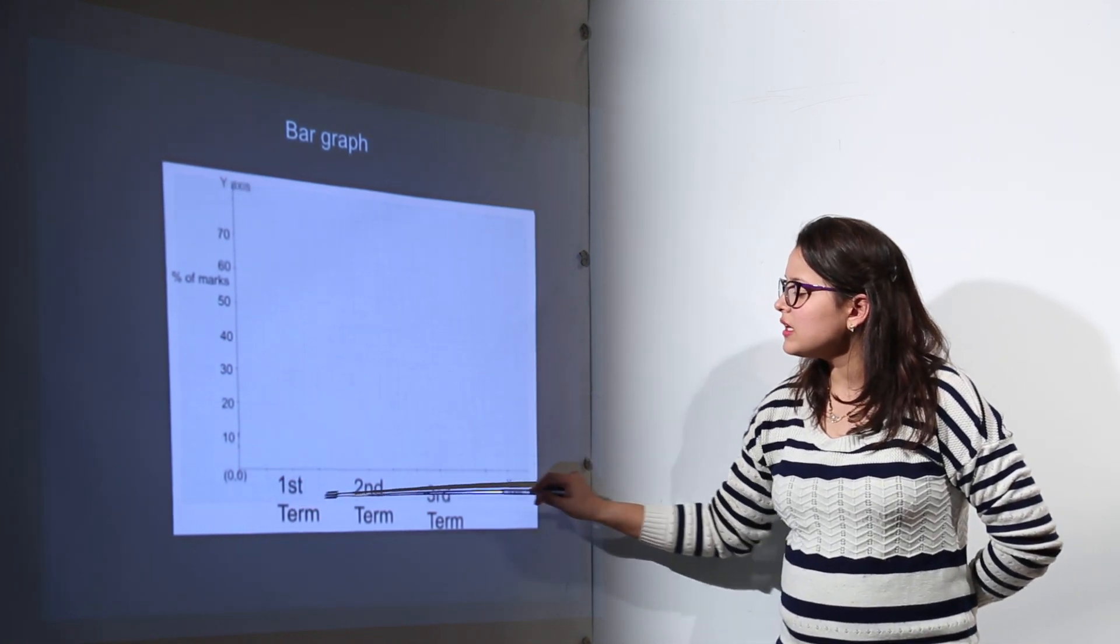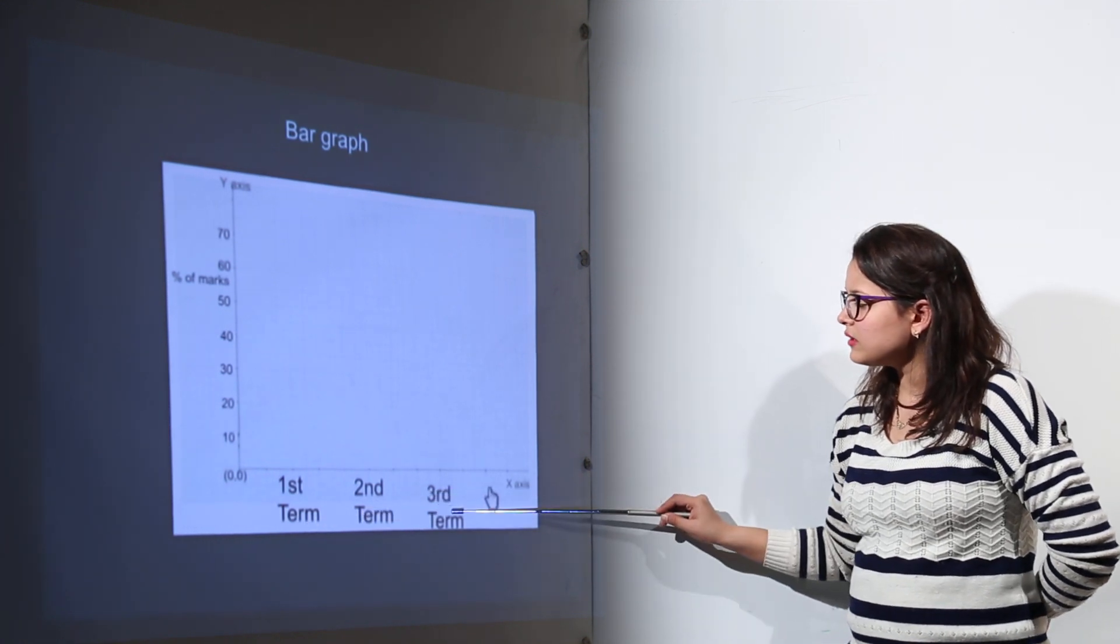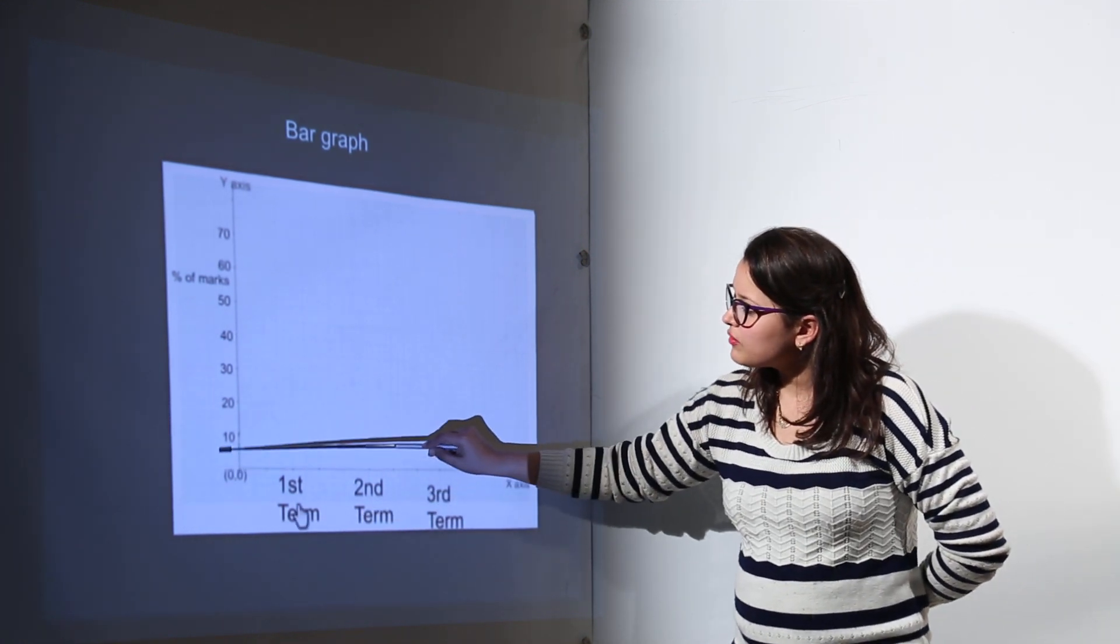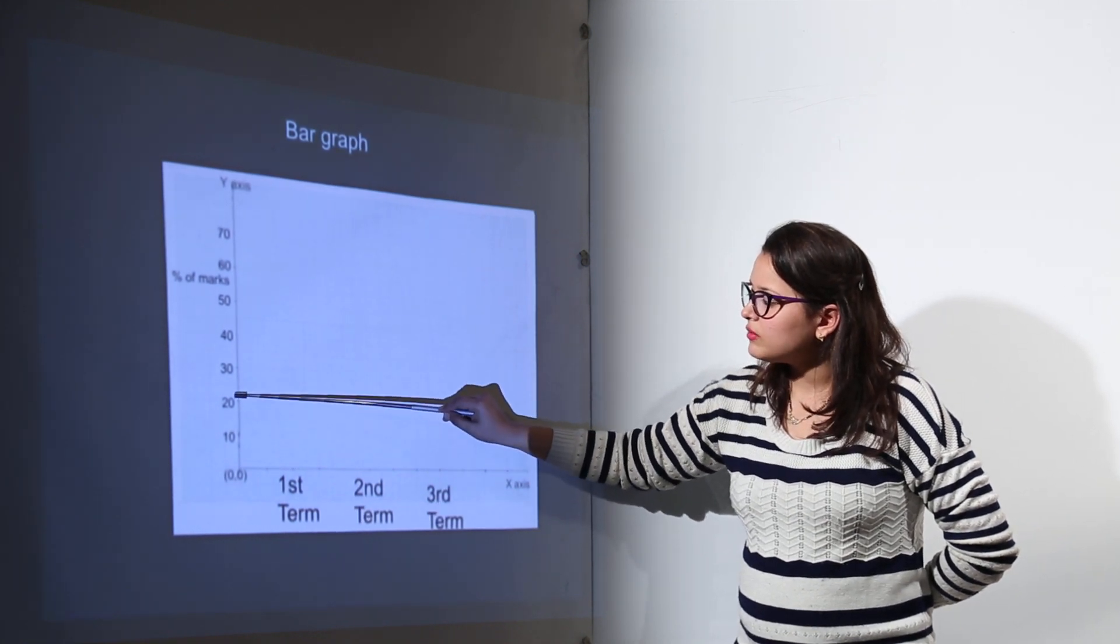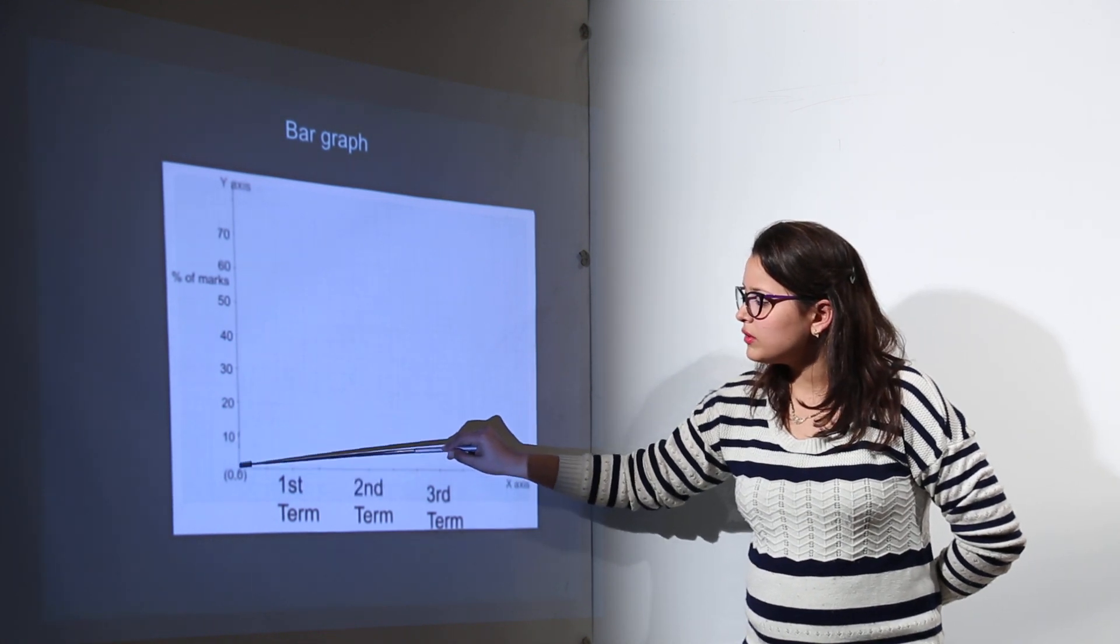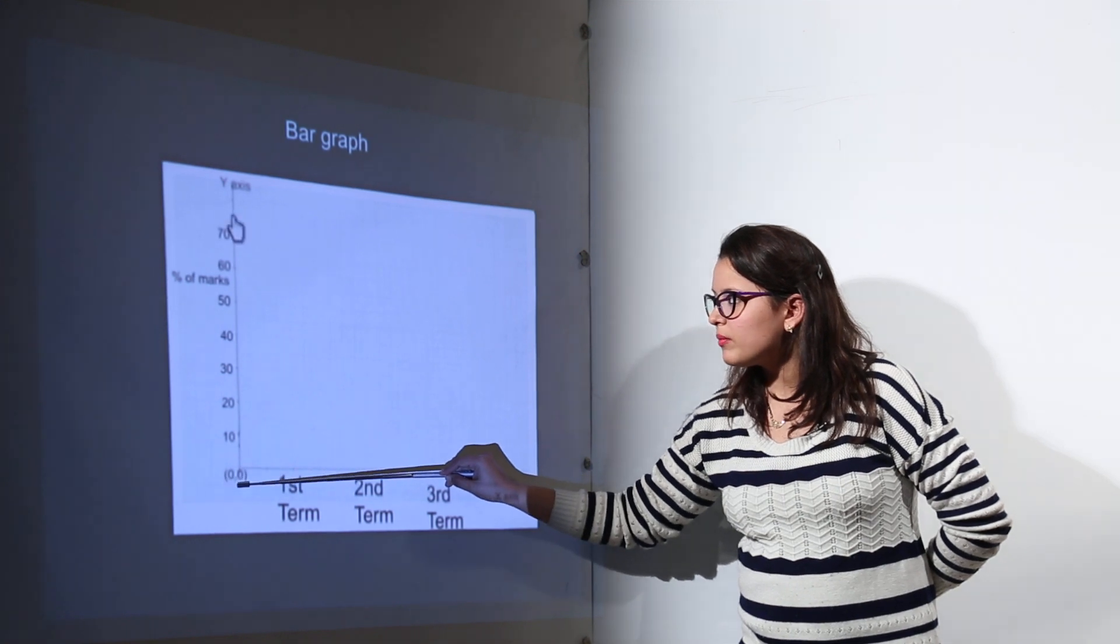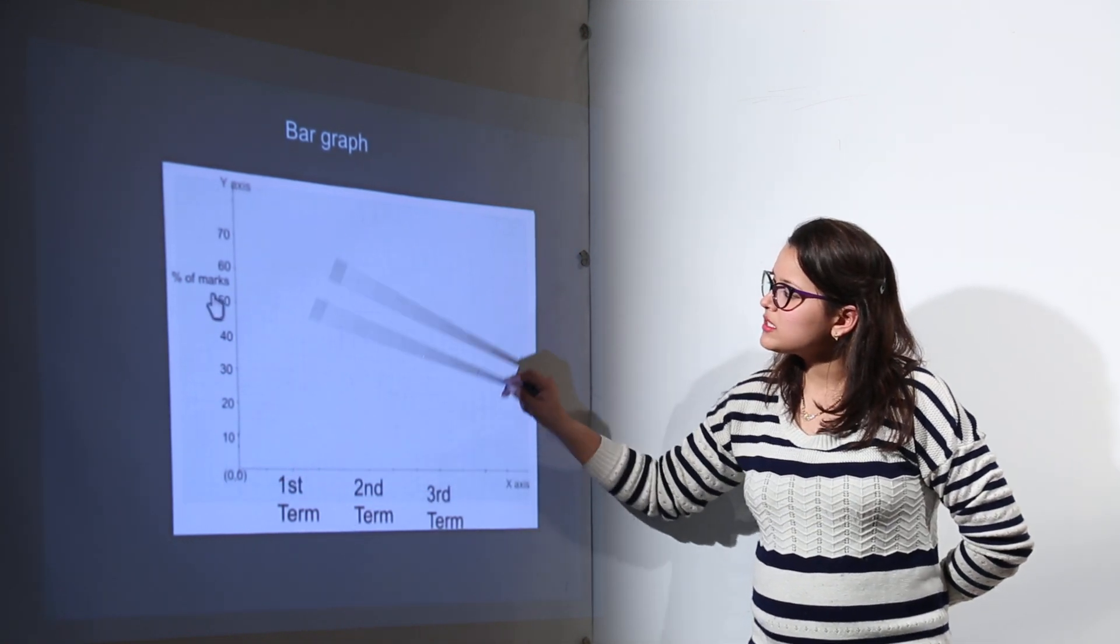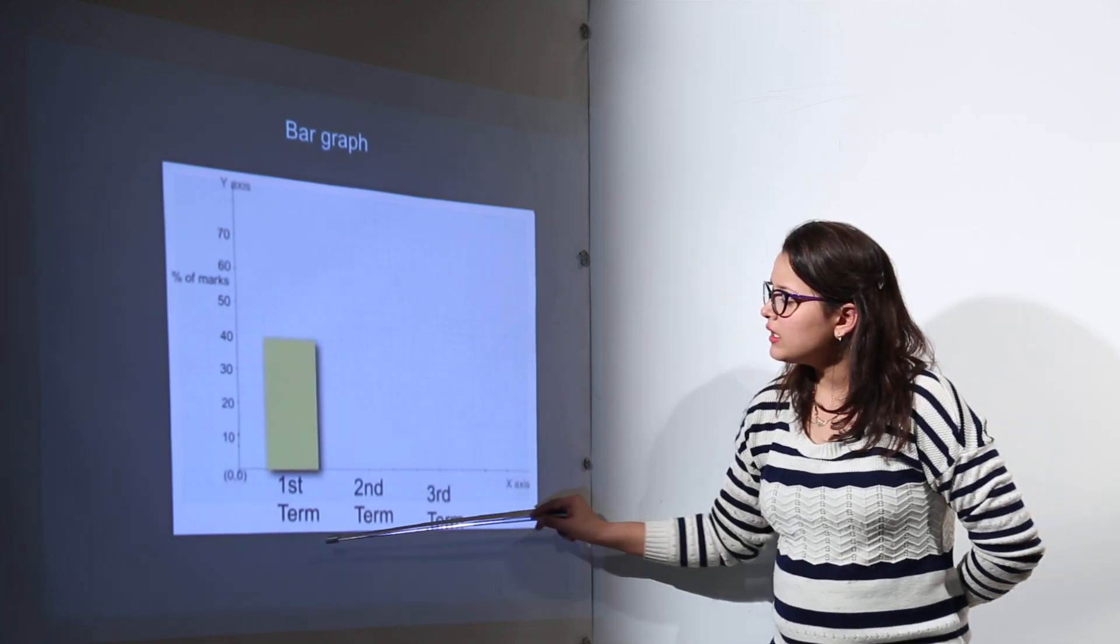On x-axis we represent the number of terms that we have: first term, second term and third term. On y-axis we have made the percentage of marks on equal intervals like 10 each. Similarly this point where both the axes are starting is known as my origin point which is 0,0. So on the y-axis we have all the percentages of marks, on the x-axis we have all the terms.